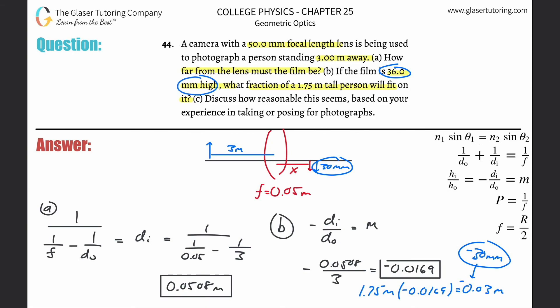But they told you the film is 36 millimeters high. So since the image is less than the height of the film, well yes, the whole object will fit on it. That's kind of the decision rule you have to invoke in order to answer the question.